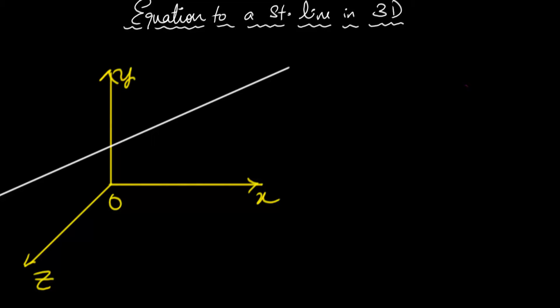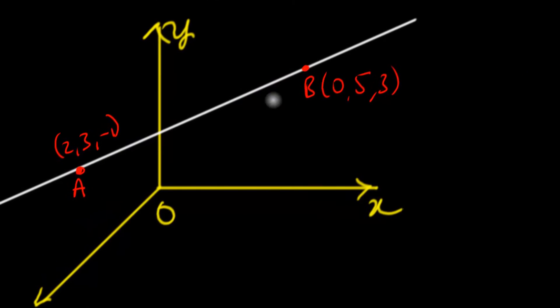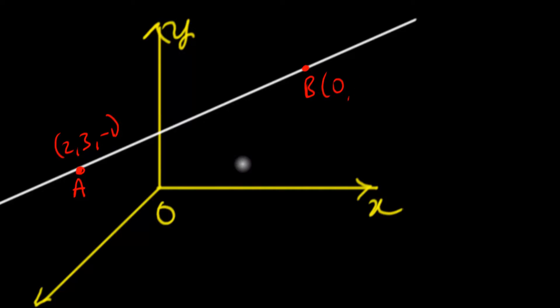We can convey that information in more than a couple of ways. One way would be to just tell you the two points through which the line passes. For example, I could give you two points like (0,5,...). If you can imagine those two points in three-dimensional space, you should be able to construct the same straight line I'm thinking about. So that's one way.